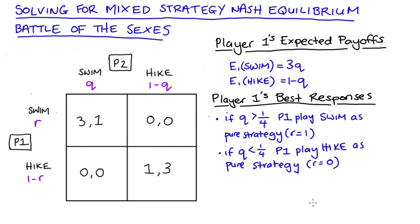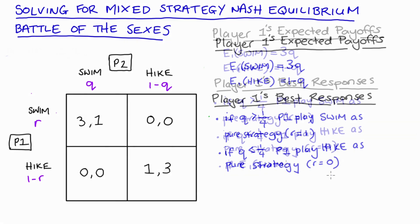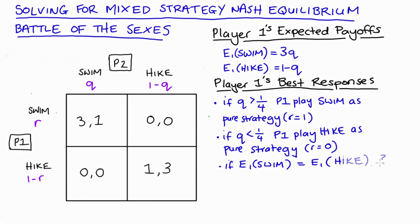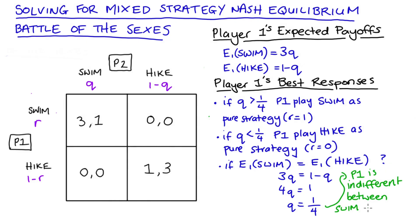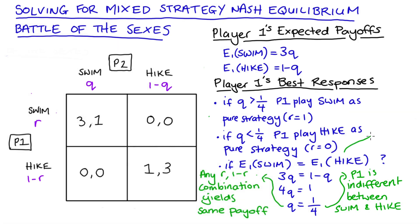So: if q is greater than one quarter, player one should play swim (r = 1), and if q is less than one quarter, player one should play hike (r = 0). An interesting question is what happens when the expected payoffs of swim and hike are exactly equal — that's when 3q equals 1 - q, which solves to q equal to one quarter. When player two plays q = one quarter, player one is exactly indifferent between hike and swim, and any r is a best response — any weighting of hike or swim yields the same expected payoff.